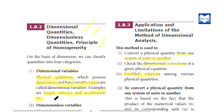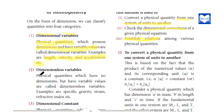That is dimensional variables. Next, dimensionless variables. Physical quantities which have no dimension but have variable values are called dimensionless variables. For example: specific gravity, refractive index. The refractive index is a numerical value — it varies by medium: water has one value, glass has another. So this is a dimensionless variable.